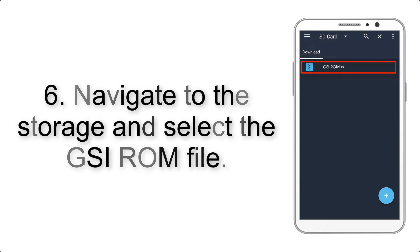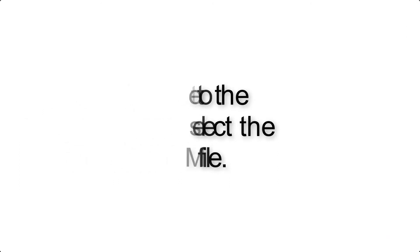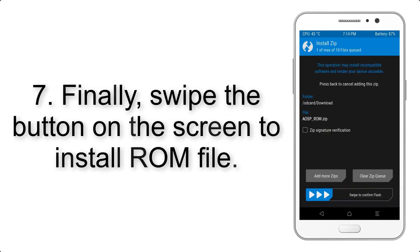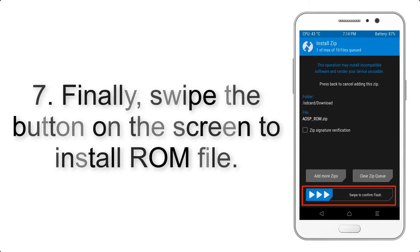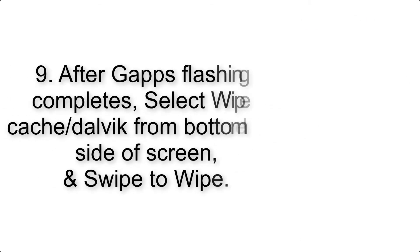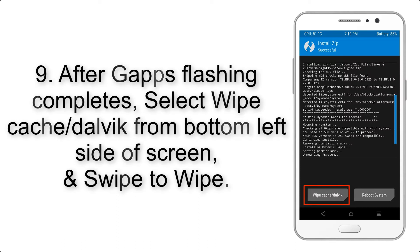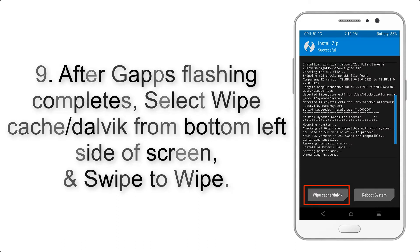Step 6: Navigate to the storage and select the GSI ROM file. Step 7: Swipe the button on the screen to install the ROM file. Step 9: After GApps flashing completes, select Wipe Cache and Dalvik from the bottom left side of the screen.